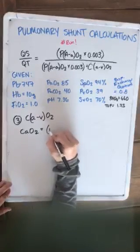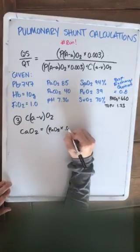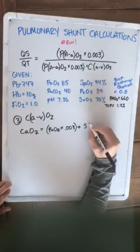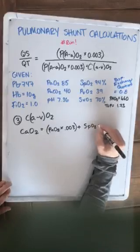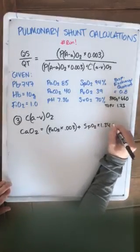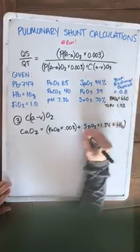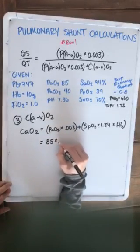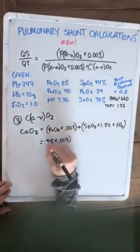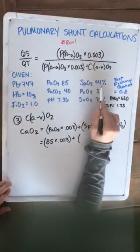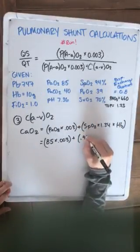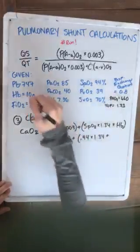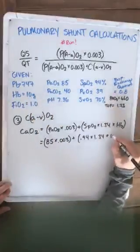CaO2 is our PaO2 times 0.003, plus our SaO2, which is our SpO2, times 1.34 times our hemoglobin. So let's plug in some numbers. Our PaO2 is 85 times 0.003. SpO2 is 94%, so we're going to put 0.94 times 1.34 times our hemoglobin, which is given here, 10 grams.